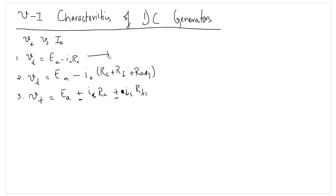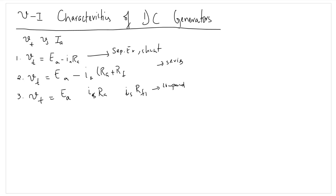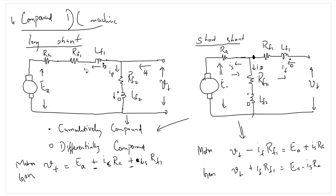These are our equations: for a separately excited and a shunt motor we have the same equation; for a series we have a different equation; and for compound machines — for a long shunt and a short shunt — we have another type of equation. We will also be neglecting the field resistance in case of series motors. These equations relate VT with respect to IA, where IA is the current flowing into the armature.